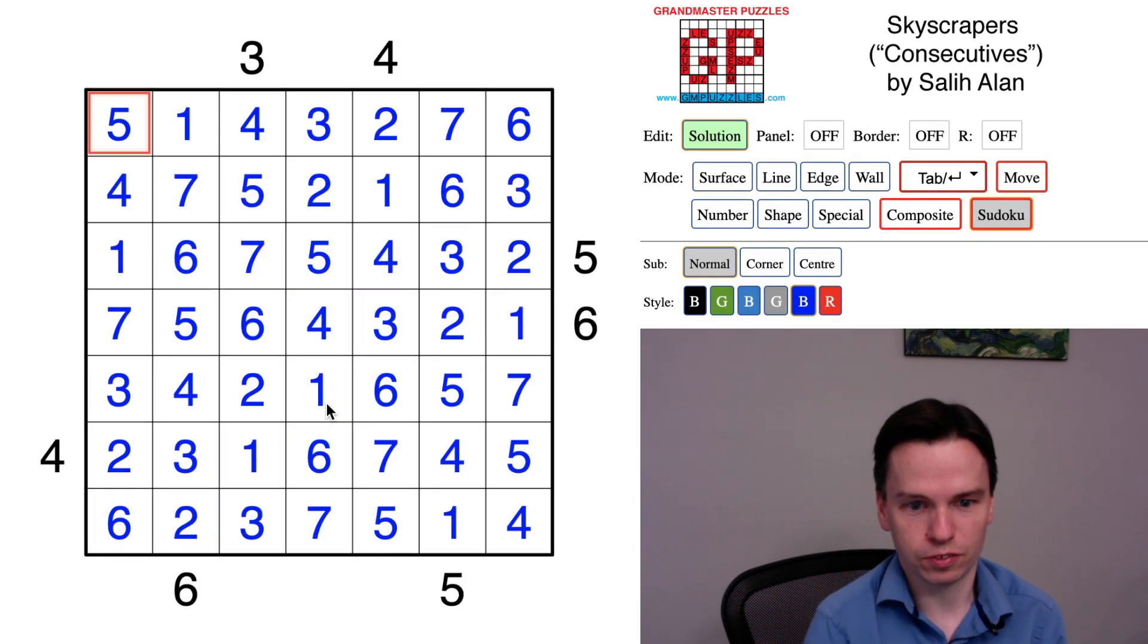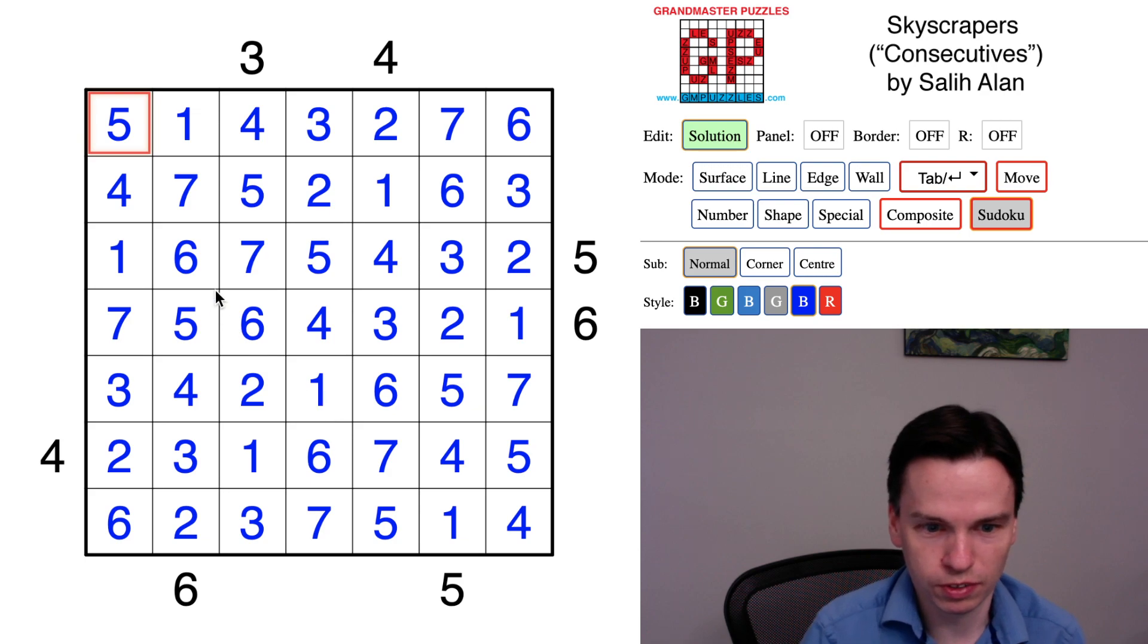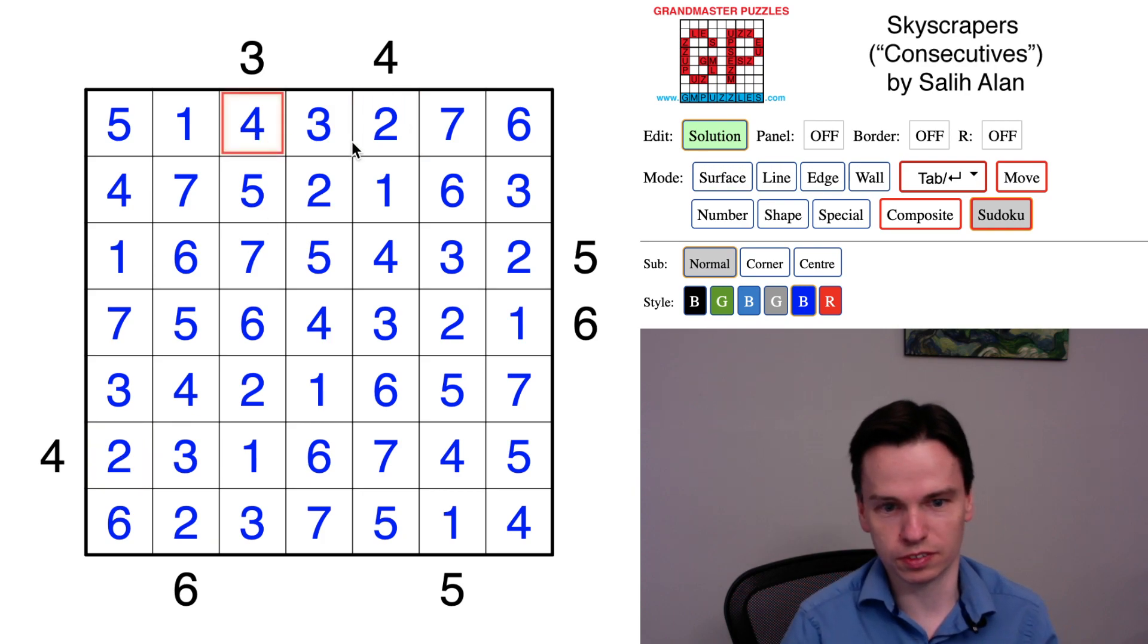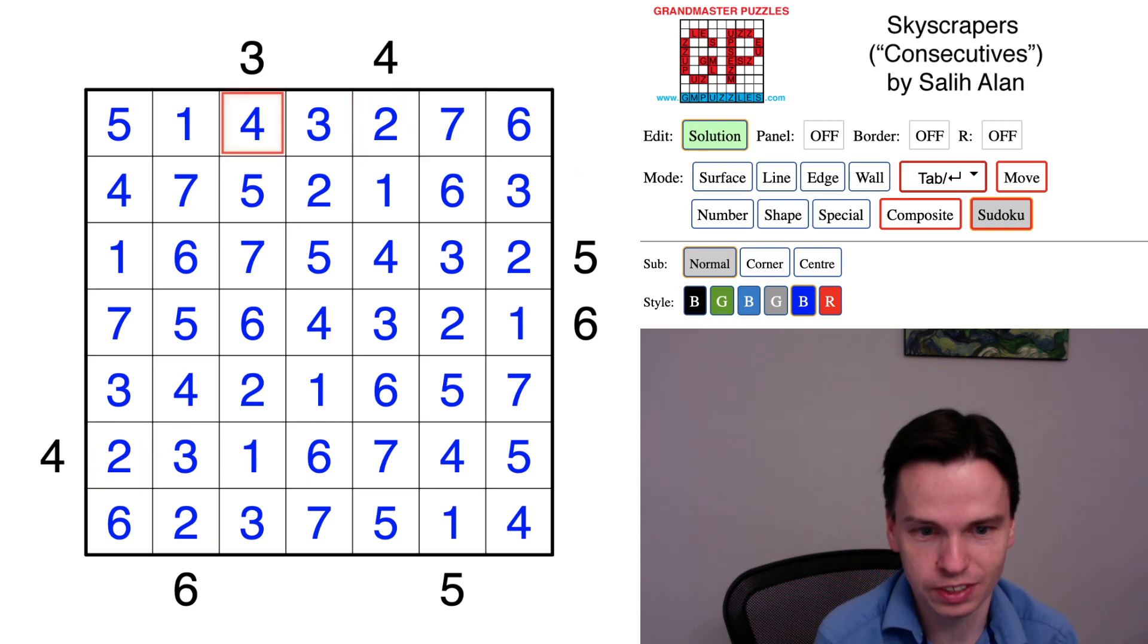So a lot of tracking of basic skyscraper constraints, but knowing how small values go to here. We've got a hidden building, which forces this row. We've got two hidden buildings, which force this column, and then some interesting deductions around the fours and the threes, so a lot of good skyscraper logic in this construction by Salihalan, so thanks for watching the video, and we'll see you again soon.